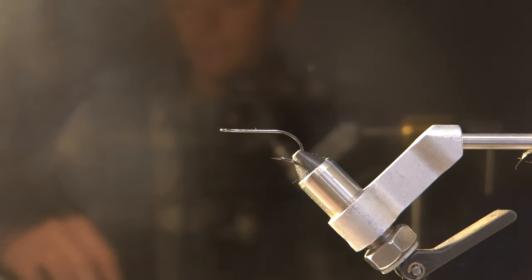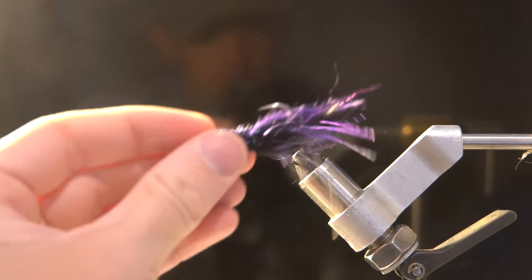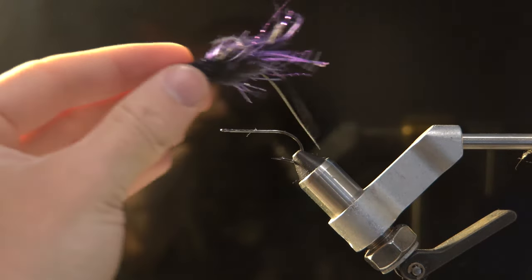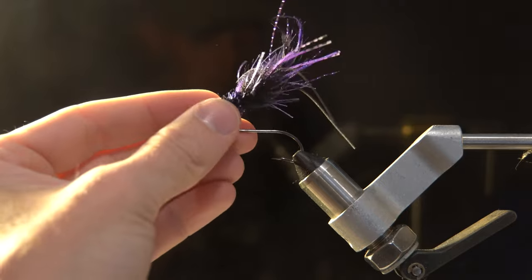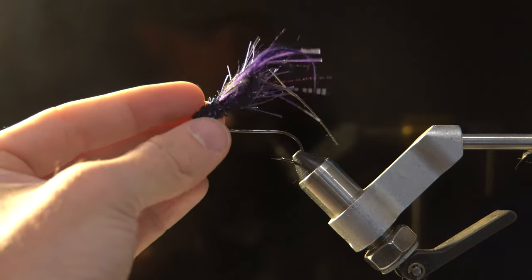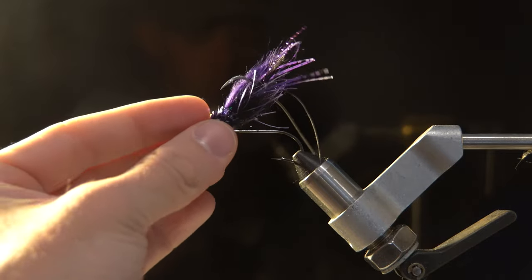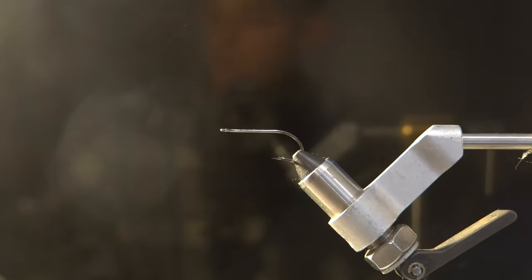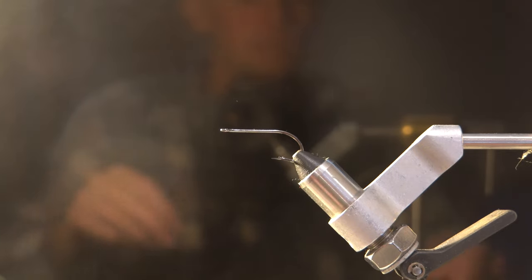All right, so this is what we're going to be tying today - just a little crab shrimp fly, crab fly. Something that looks a little buggy and gets the fish's attention. It can crawl on the bottom, sits hook point up. Let's get into it. I'm going to run through the materials real quick. Size two hook.